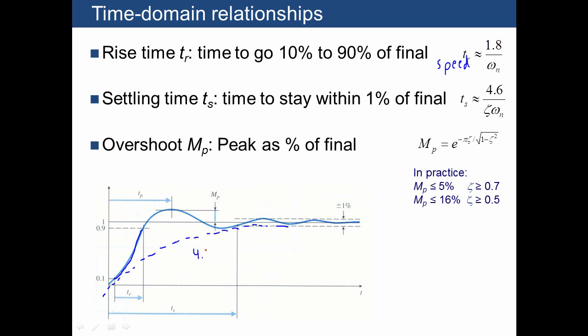And we already said that that's 4.6 time constants, which is also equivalent to negative 4.6 over sigma, or 4.6 over zeta times omega n, as you see up here.